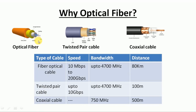Fiber optic cable is made up of a very thin, pliable tube of glass or plastic. The speed of optical fiber cable is much larger compared to twisted pair cable. In twisted pair and coaxial cables, electrical signals are used, while in optical fiber, light signals are used. Therefore, we get tremendous bandwidth and can use it for longer distances.